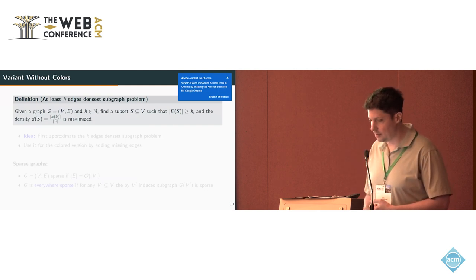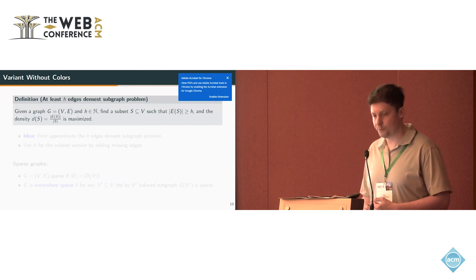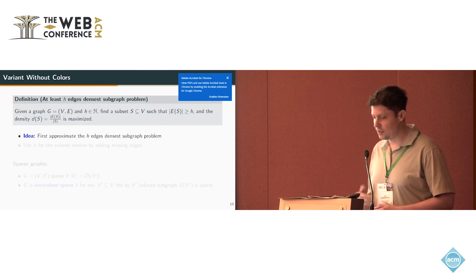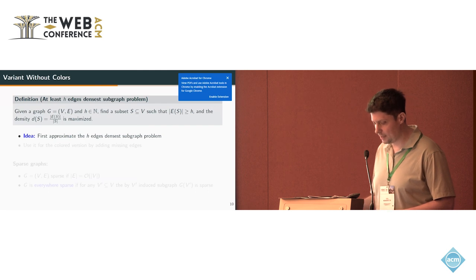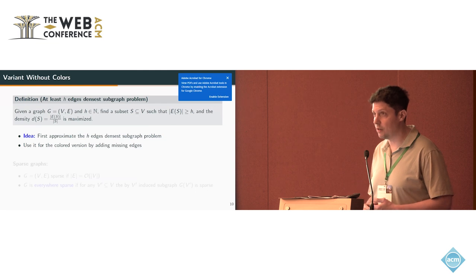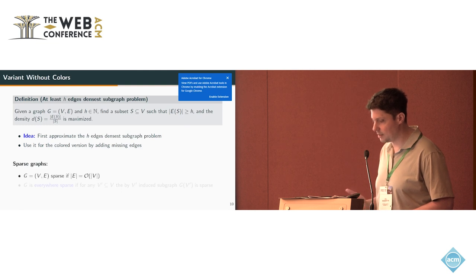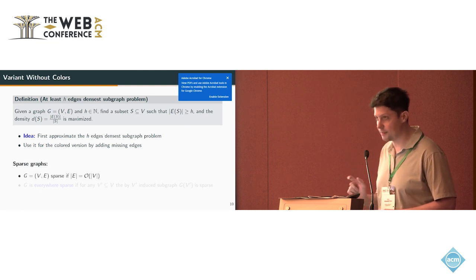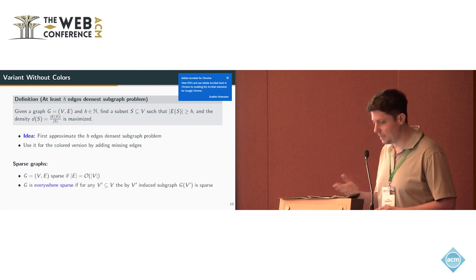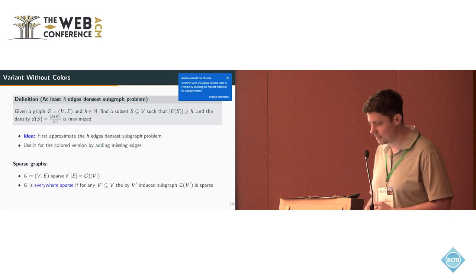To do this, we first define a different variant of the problem where we ignore the colors. Here we are interested in finding a dense subgraph where we only require to have H edges. The idea is to first approximate this problem and find an approximation for the densest subgraph with H edges, check if it fulfills all color requirements, and if not, add missing edges with the specific colors. This works in sparse graphs, where a graph is sparse if the number of edges is asymptotically in order of the nodes. Especially, we need the property of everywhere sparse, where this holds for each possible induced subgraph.